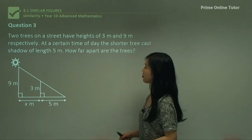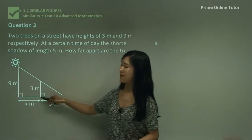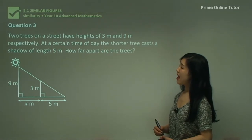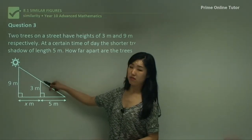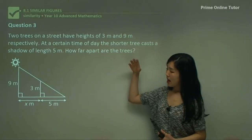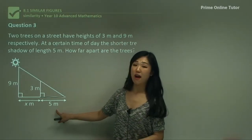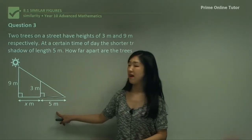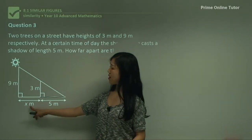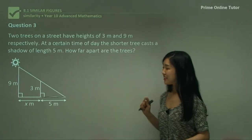Question 3. Two trees on a street have heights of three metres and nine metres respectively. At a certain time of day, the shorter tree casts a shadow of length five metres. How far apart are the trees? The smaller tree is three metres tall — the sun casts a light from the top, creating a shadow of five metres on the surface. The larger tree's shadow is x plus five, because x is the distance between the two trees and five is the smaller shadow length.